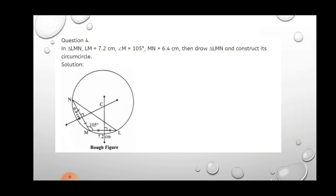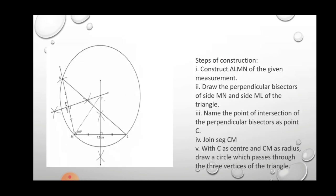First draw the rough figure, then follow the steps to construction. Draw perpendicular bisectors of sides MN and ML. Both perpendicular bisectors intersect at one point — the circumcenter C. The distance from C to any vertex (e.g., CM) is the radius of the circumcircle. Taking C as center and CM as radius, draw the circle passing through all three vertices of triangle LMN.